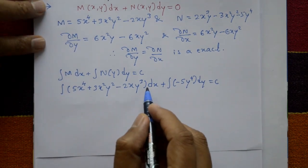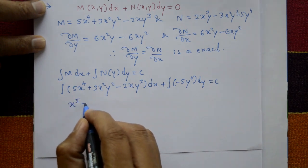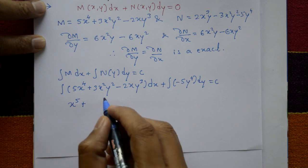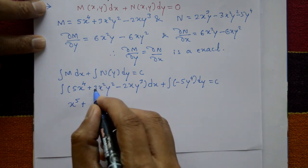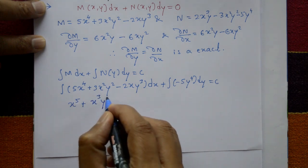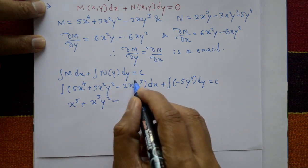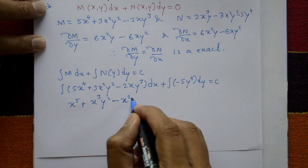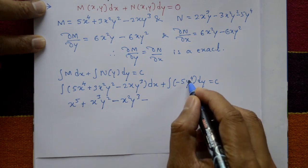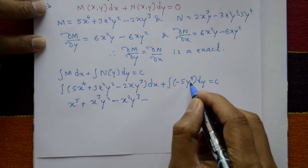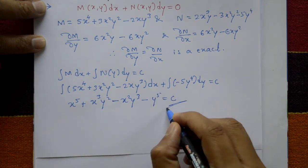Now integrate M with respect to x. 5x⁴ integrates to x⁵ (5/5 cancels). For 3x²y², integrating x² gives x³/3, and 3 cancels, giving x³y². For -2xy³, integrating x gives x²/2, and 2 cancels, giving -x²y³. Then integrating -5y⁴ with respect to y gives -y⁵ (5/5 cancels). So the required solution is: x⁵ + x³y² - x²y³ - y⁵ = c.